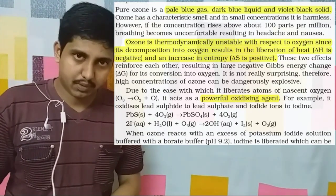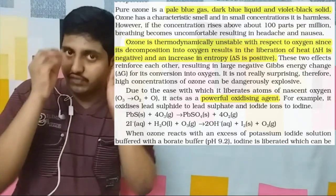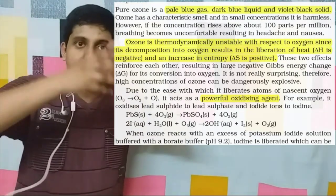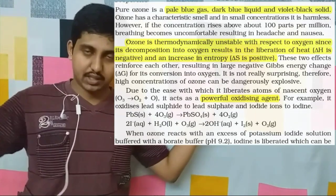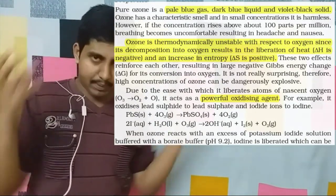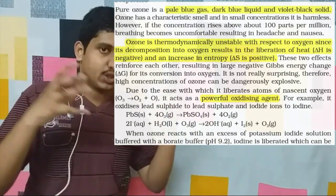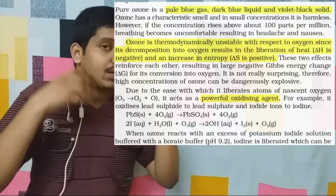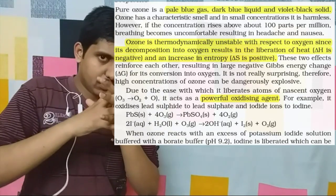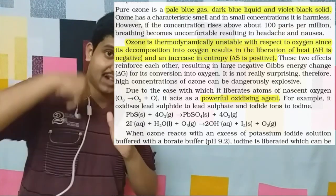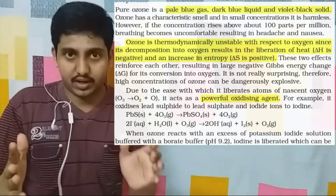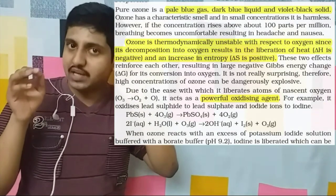Next, the physical appearance of ozone in various states. In the gas state, since many oxygen atoms are dispersed, it is a pale blue gas. When they come together in the liquid state, it becomes a dark blue liquid. When all molecules come together in the solid state, the darkness increases further and it becomes a violet-black solid. This has been asked in previous question papers.